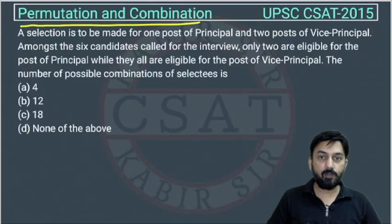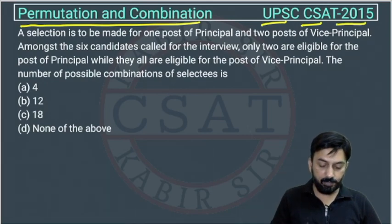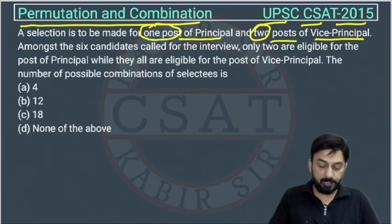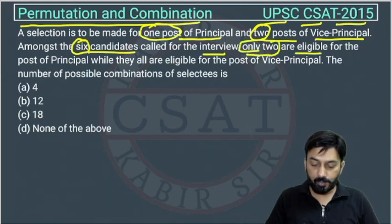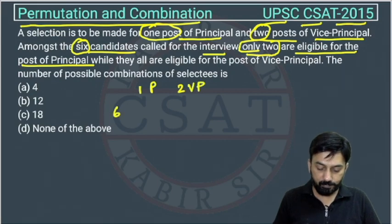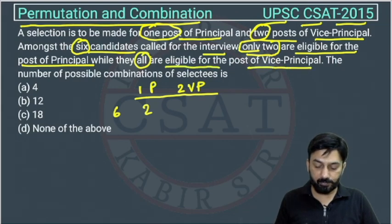This is a question from the permutation and combination chapter asked by UPSC in their CSAT paper of 2015. A selection is to be made for one post of principal and two posts of vice principal amongst six candidates called for the interview. Only two are eligible for the post of principal, while all six are eligible for the post of vice principal.